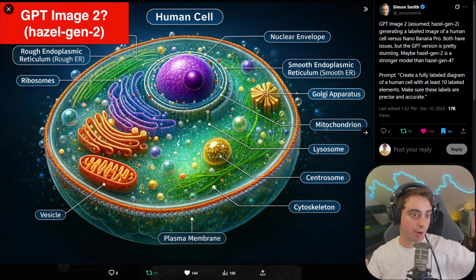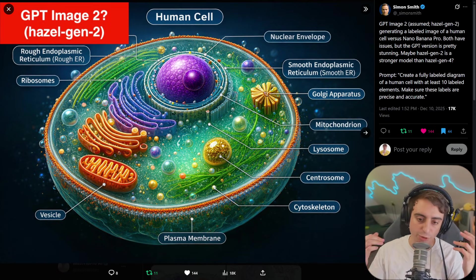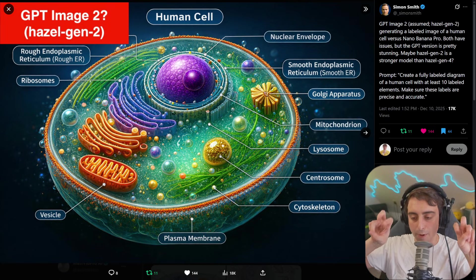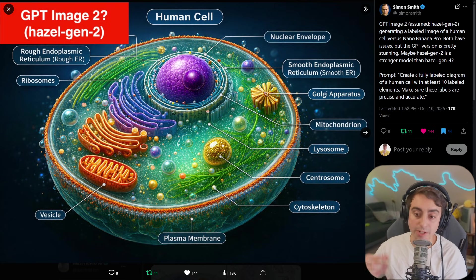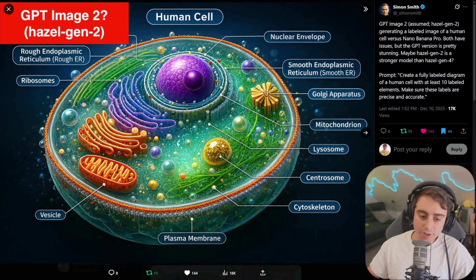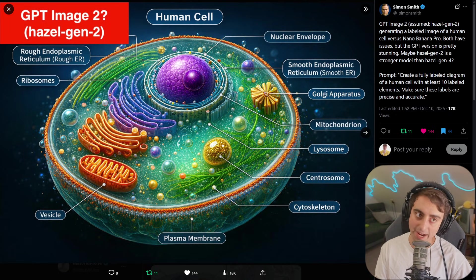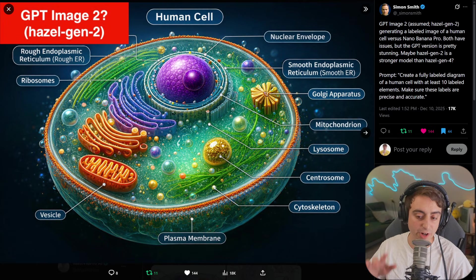What you see, this human cell diagram, has been made by HazelGen2. This is a mystery model floating around on those AI battle arenas, the A and B testing. Everyone in the community is super confident that this is indeed from OpenAI as GPT Image 2, their answer to Google's Nano Banana Pro.